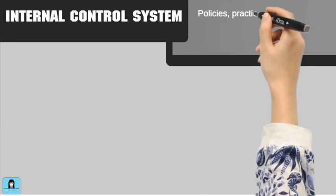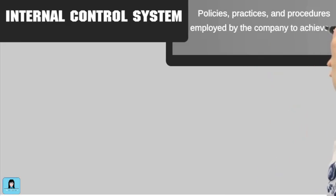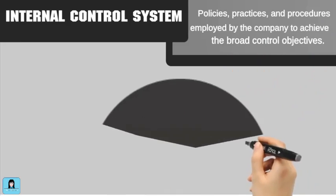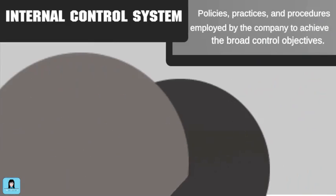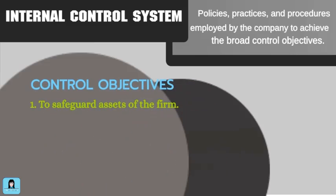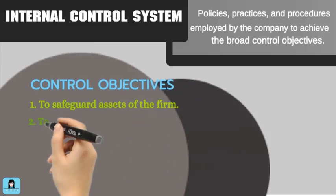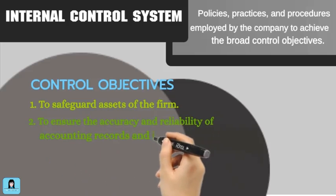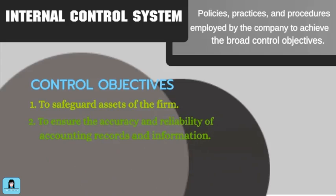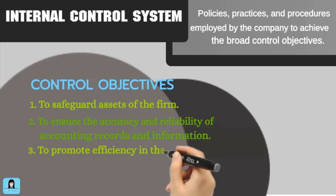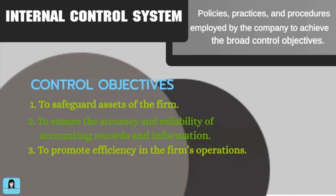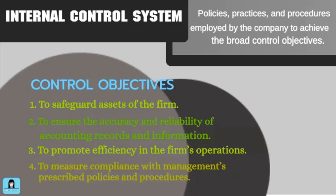The internal control system comprises policies, practices, and procedures employed by the company to achieve four broad objectives. First, to safeguard assets of the company. Second, to ensure the accuracy and reliability of accounting records and information. Third, to promote efficiency in the firm's operations. Fourth, to measure compliance with management's prescribed policies and procedures.